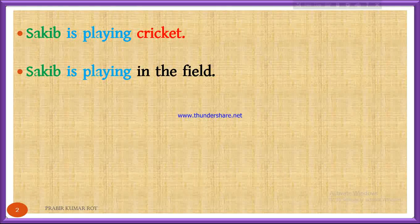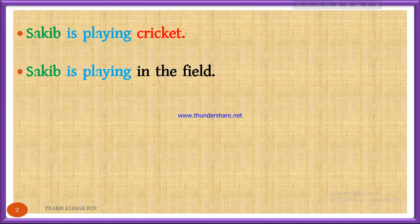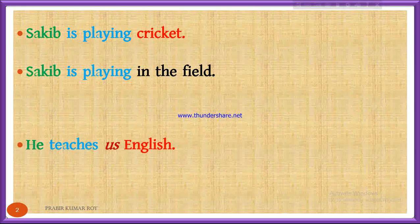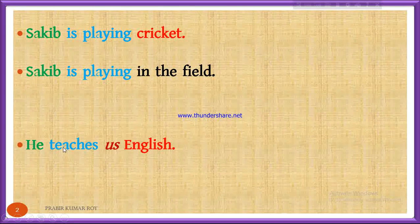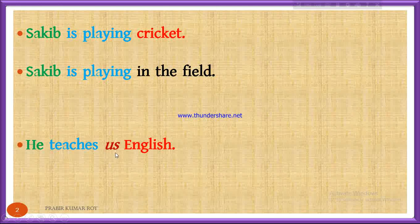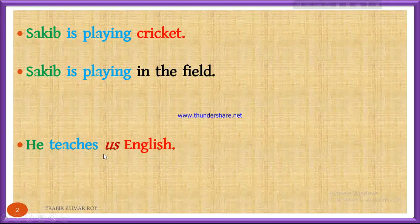A transitive or intransitive verb depends on whether a direct object is available in the sentence or not. In a sentence, there may be more than one object. Please look at the sentence: He teaches us English. He is the doer, so he is the subject. Teaches is the verb. Here we have two objects: one is 'us' and another is 'English'. If you ask 'What does he teach?' the answer will be English, so English is an object. If you ask 'Whom does he teach?' the answer will be 'us', so 'us' is another object.